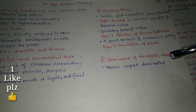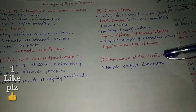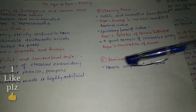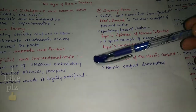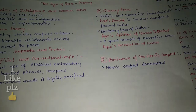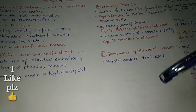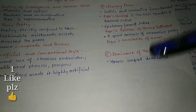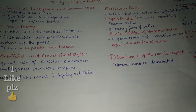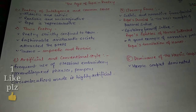A good example of narrative poetry is Pope's translation of Homer. The dominance of the heroic couplet is also a key feature — the heroic couplet was much used and dominated the poetry of this age.